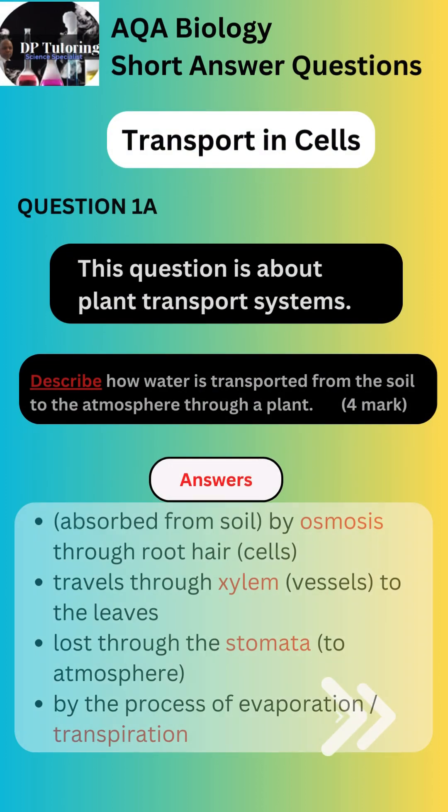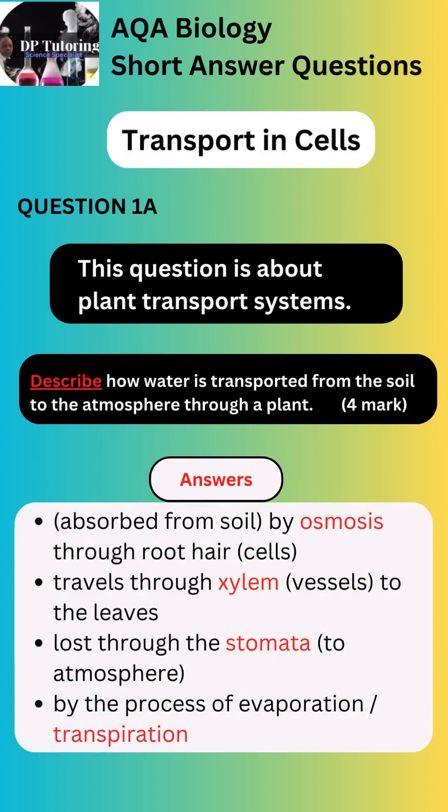The answers for part A are on the screen. The key terms that must be included in your answer to obtain the four marks are highlighted. 1. Water is absorbed by osmosis through root hair cells. 2. Water travels through xylem vessels to the leaves. 3. Water is lost through stomata to the atmosphere. 4. By a process of evaporation or transpiration.